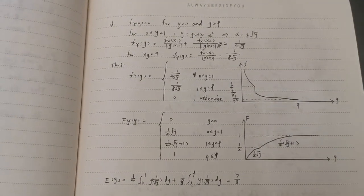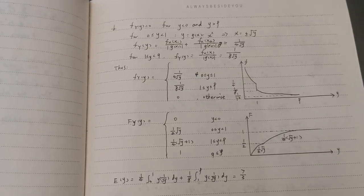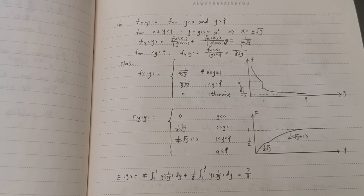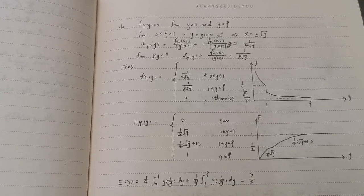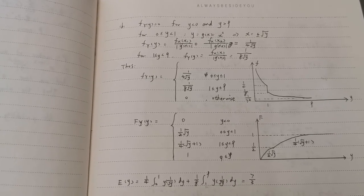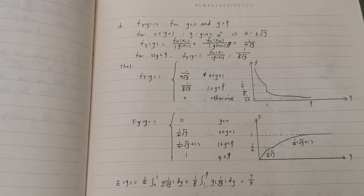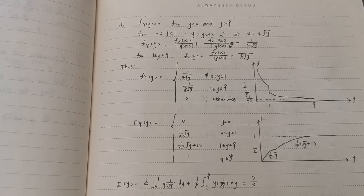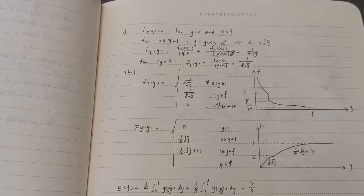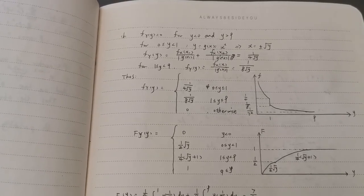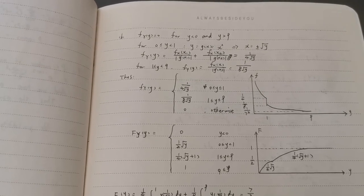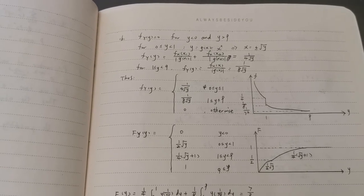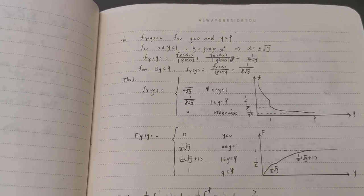Then we move to the second subproblem. We are given that a equals minus 1 and b equals 3. Firstly, we know that lowercase fy equals 0 for y smaller than 0 and y larger than 9. This is because a and b are given.